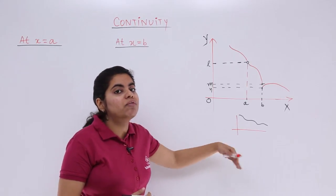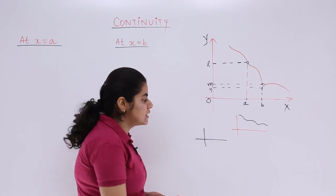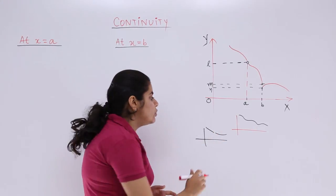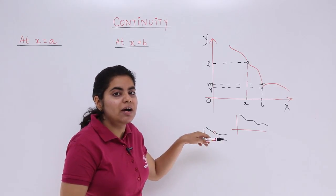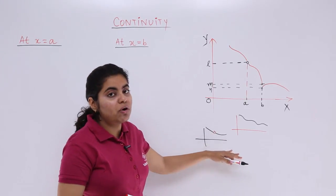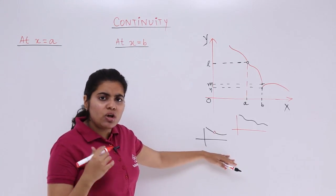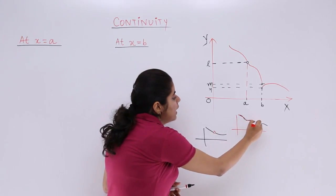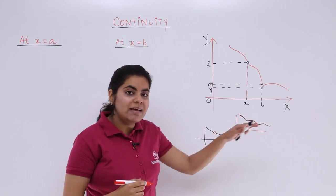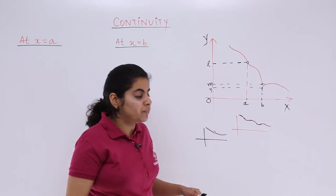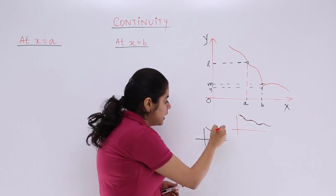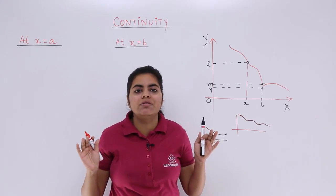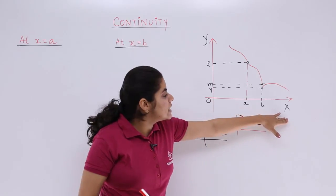This graph I've shown is a graph of a continuous function. But if I have a graph where I draw it somewhere, then have to stop, and then the graph continues again — there is a hole in it. That kind of graph is called a graph of a non-continuous function. If I do not have to lift my pen or pencil and can continuously keep drawing, it is a continuous function. But if I have to stop, lift my pen, and continue drawing again, it is a non-continuous function.